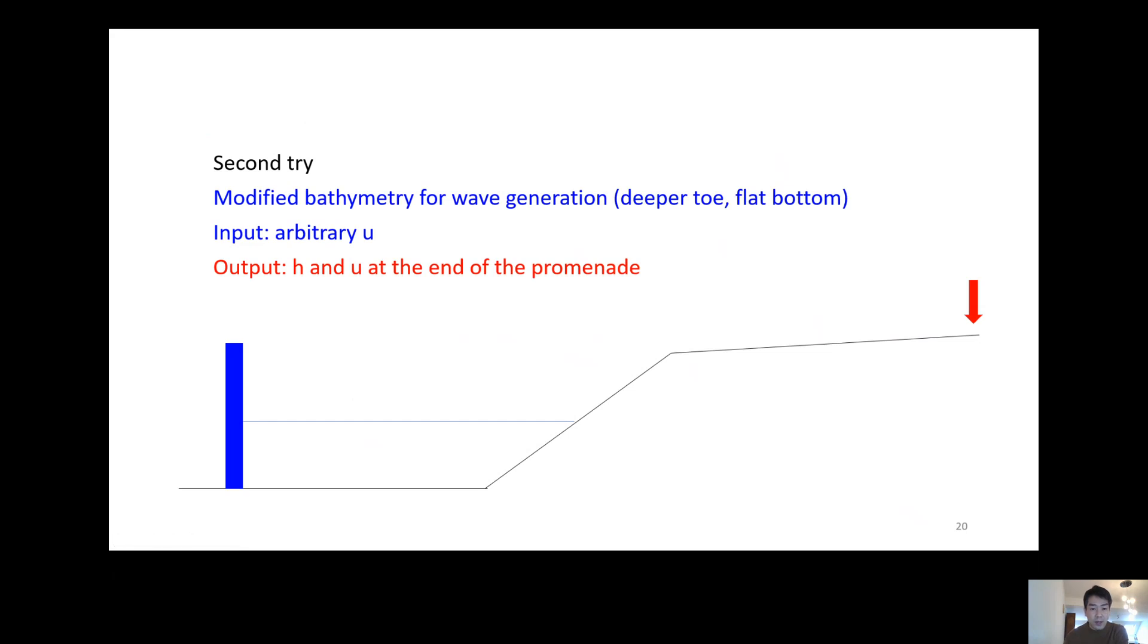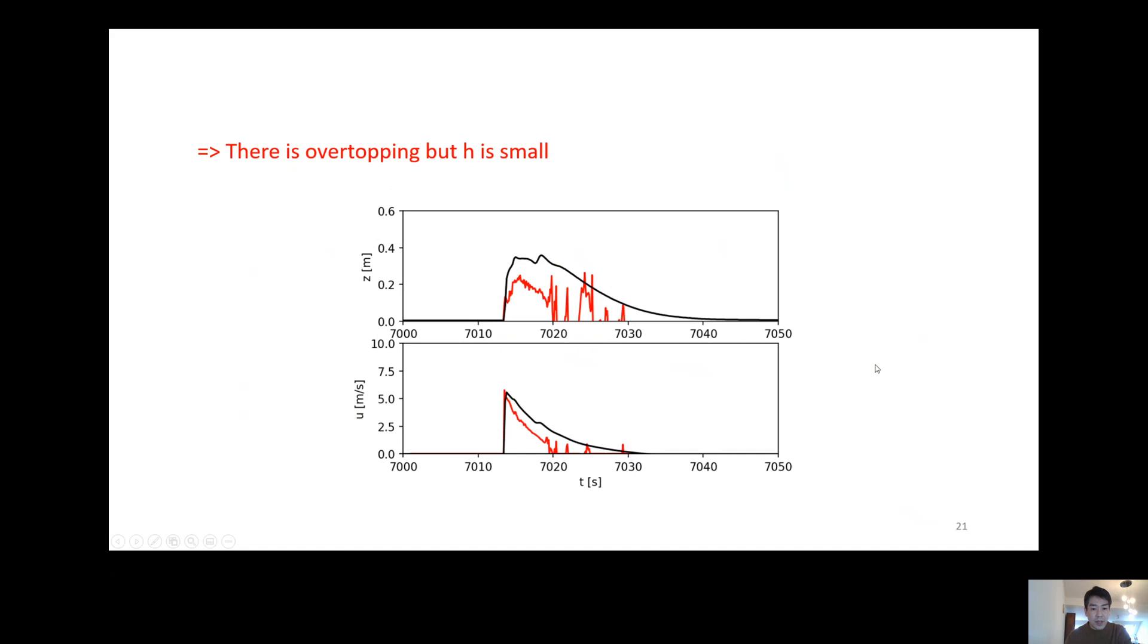On the second try, we made the toe deeper and the place of the paddle more offshore in order to have enough water mass in the domain. With a certain paddle movement we assigned, we observed a small overtopping.